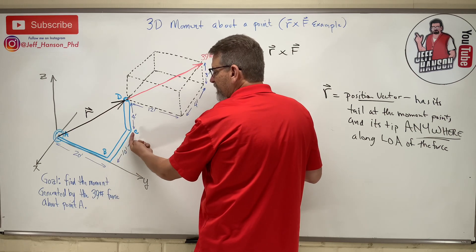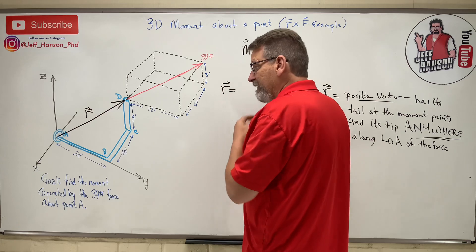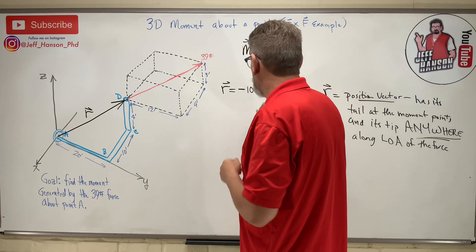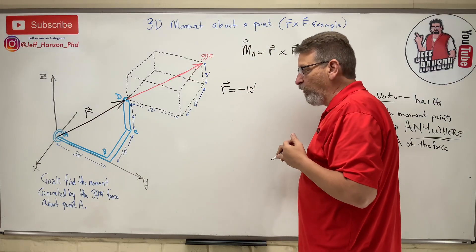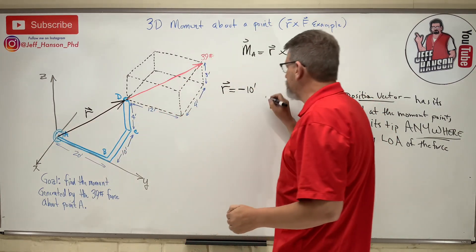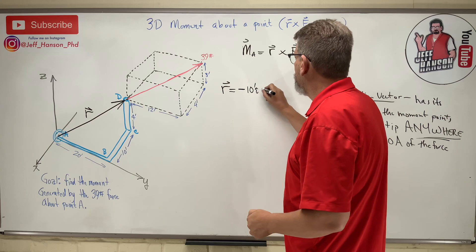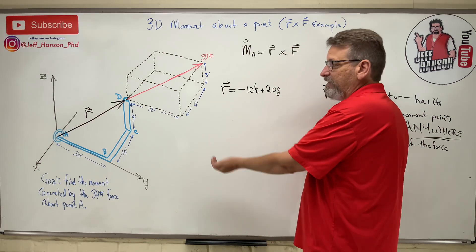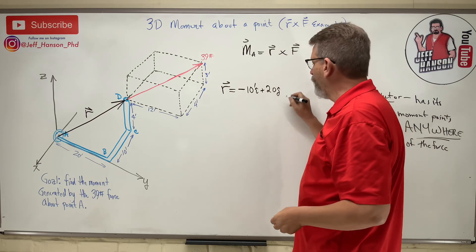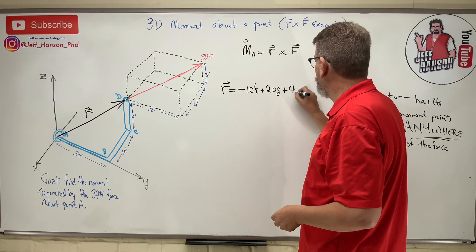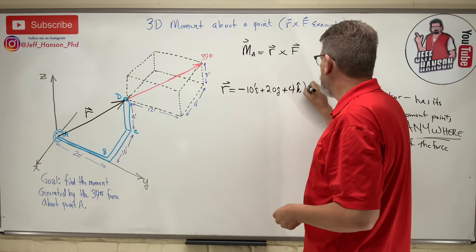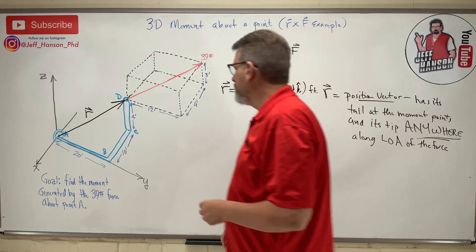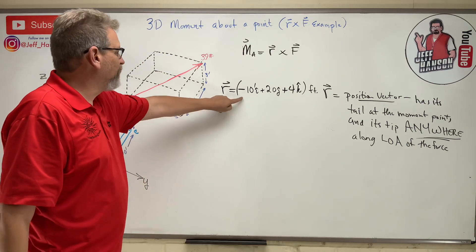In the x you have to go negative 10 feet. In the y you have to go 20 feet, that's negative 10 i-hat plus 20 j-hat. And then in the k-hat direction you have to go 4 positive. And that whole thing is feet. There's our r vector.